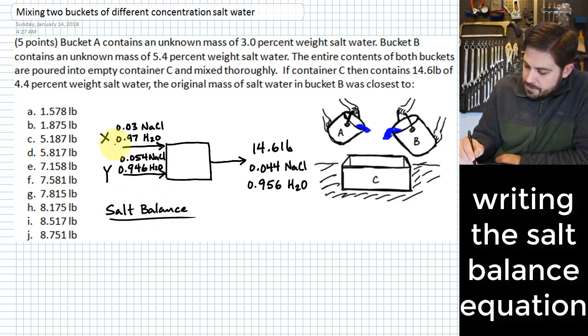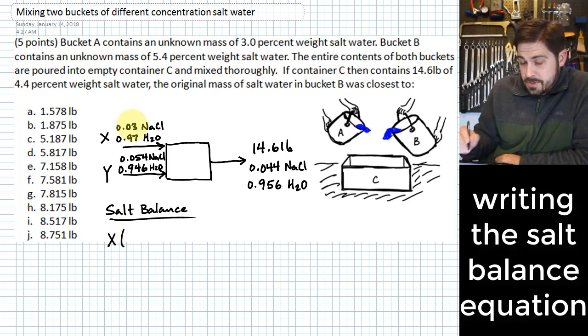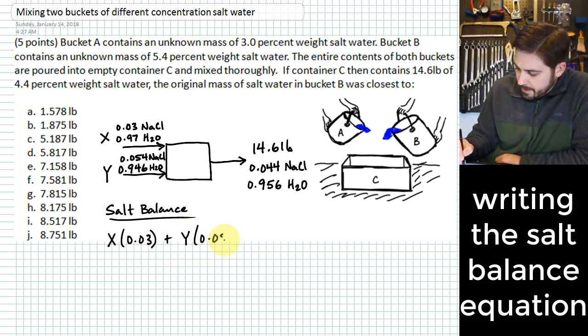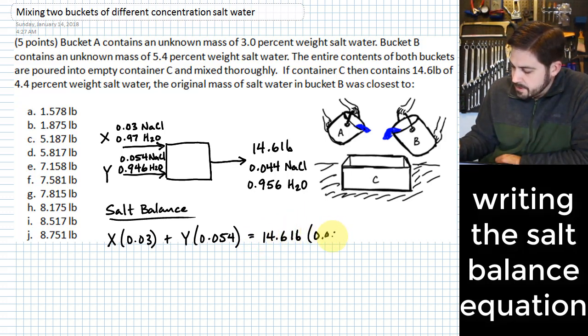So for the salt balance that we have here we take the input x and multiply it by the percentage that it is salt which is if we express it as a fraction it's just 0.03 plus y times 0.054. This is going to be equal to 14.6 pounds times 0.044.